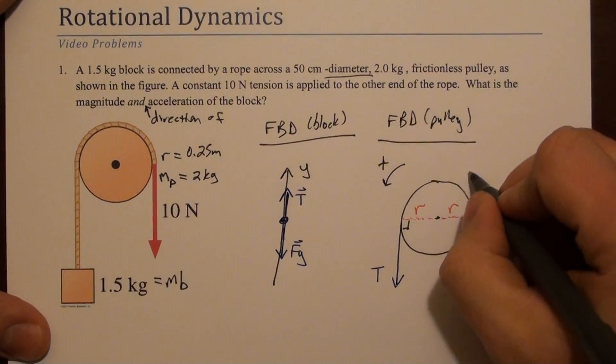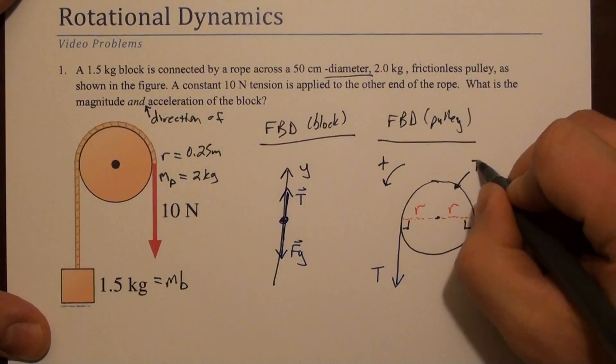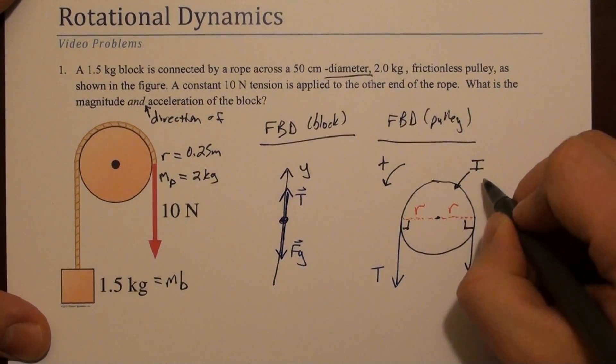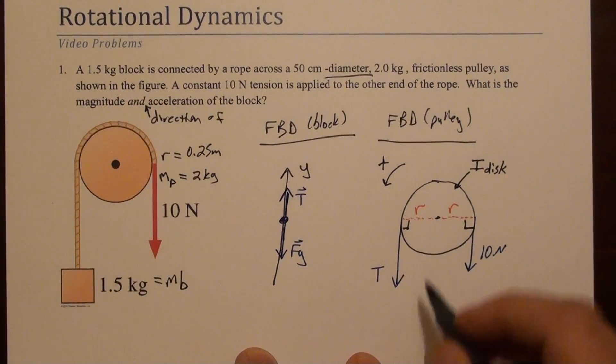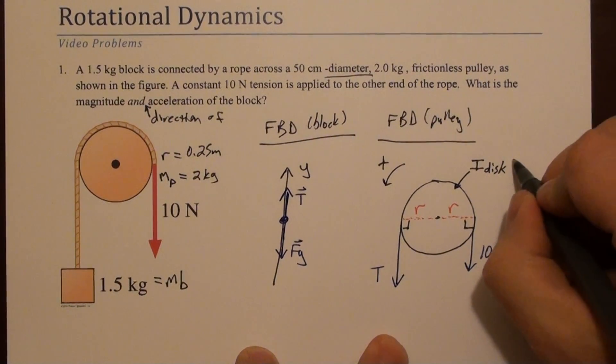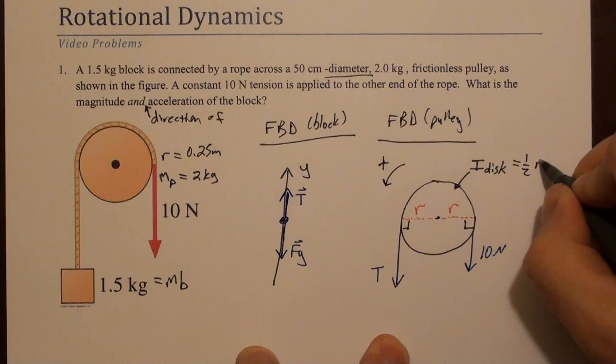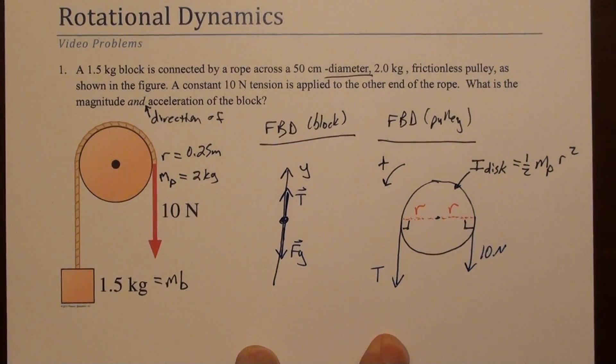I want to mention that this has a moment of inertia. It's not an eye, right? It's a disk, it's solid. So that's one half m pulley r squared. We're going to end up using that later.